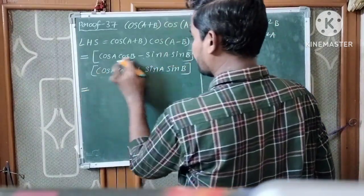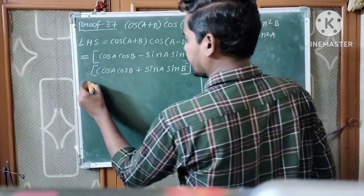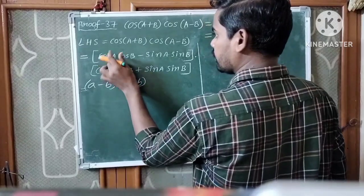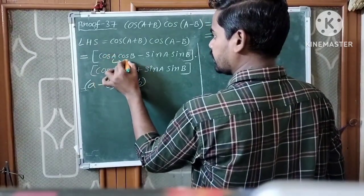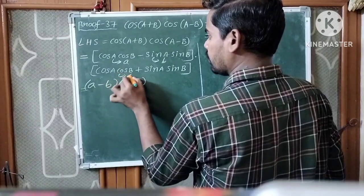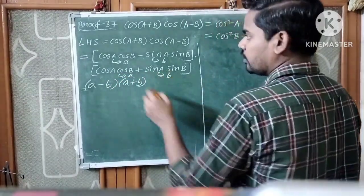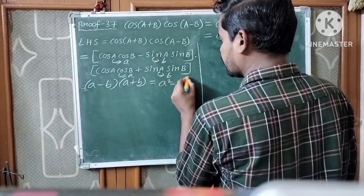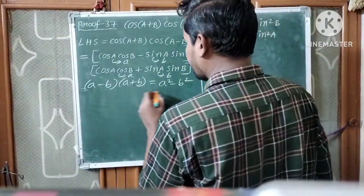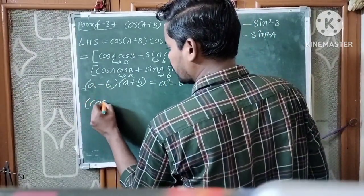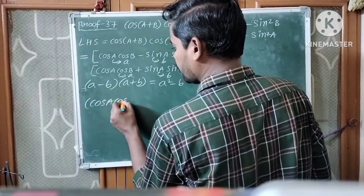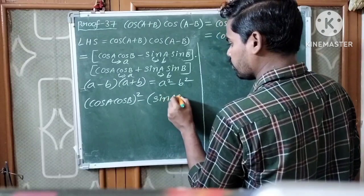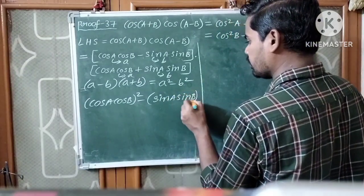Now, this is of the form (A-B)(A+B), which equals A² minus B². Here, A means cosA·cosB and B means sinA·sinB. So we get (cosA·cosB)² minus (sinA·sinB)², which equals cos²A·cos²B minus sin²A·sin²B.